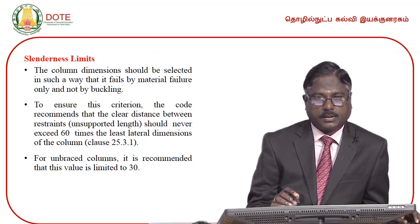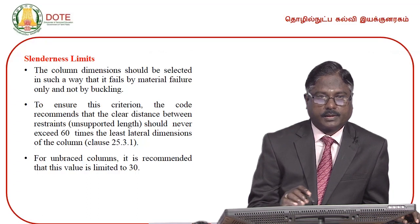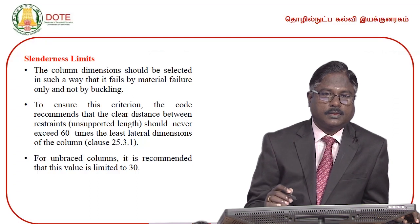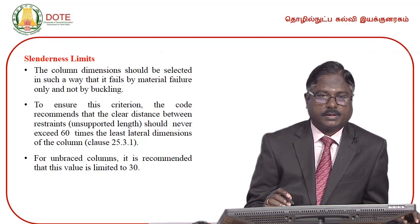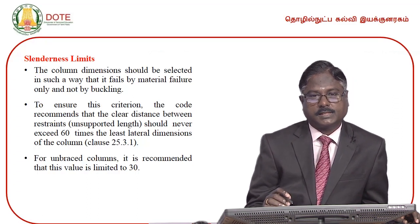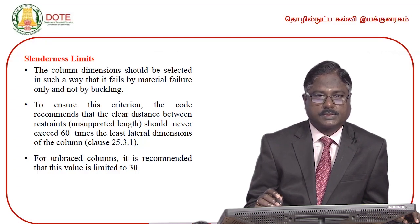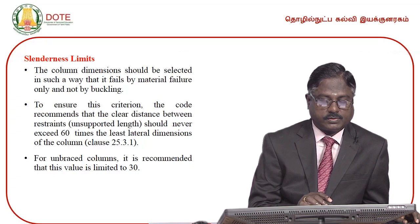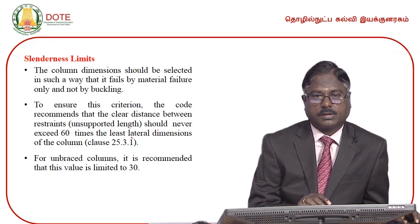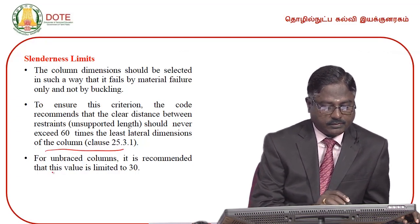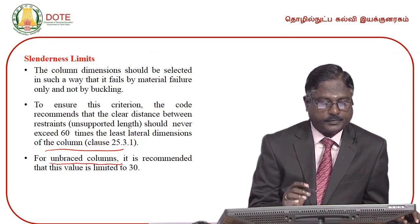For an unbraced column, the unsupported length should not exceed 30 times the least lateral dimension. So, 60 times applies to braced columns and 30 times applies to unbraced columns.